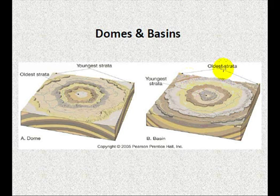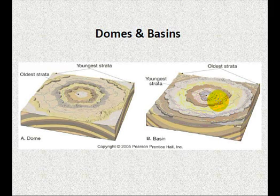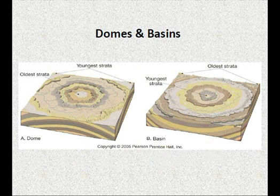Your younger rocks are out here at the edges, and the dips are all pointing out away from the center. In the case of the circular valley, it's referred to as a basin — just the opposite. The youngest strata are in the middle, the oldest rock units are around the edge, and everything is dipping inwards. So the difference between a dome and a basin: these are geological structures that can be formed by plastic deformation.